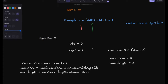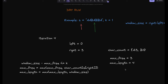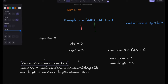In iteration 4, right is at index 3, which is A. We update character count: A = 3. Max frequency becomes 3. The window size is 4, so max length becomes 4. We are not shrinking the window here because window size minus max frequency = 4 minus 3 = 1, which is less than or equal to k = 1. This condition ensures we do not exceed the allowed number of k replacements. When the difference exceeds k, we need to shrink the window.